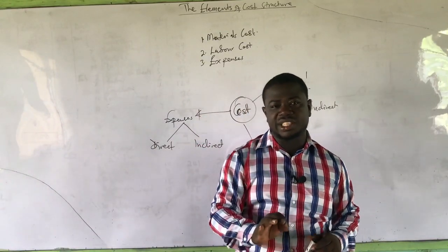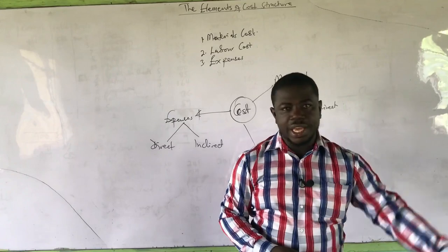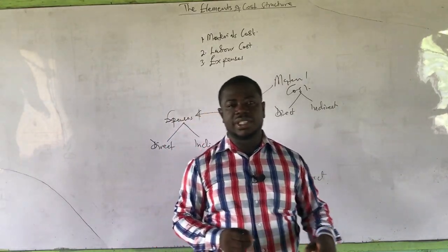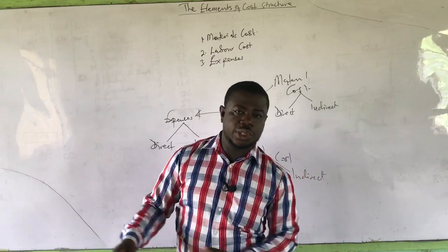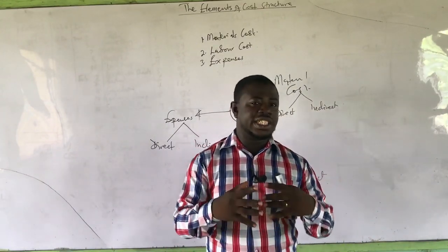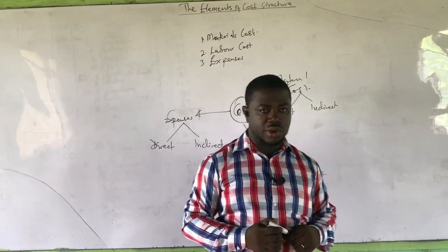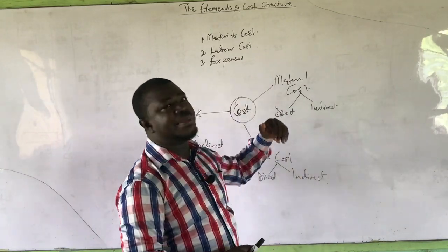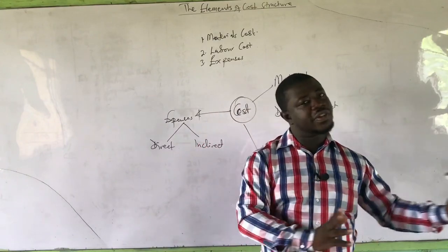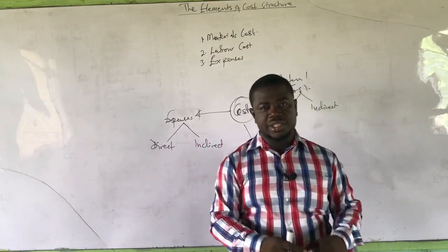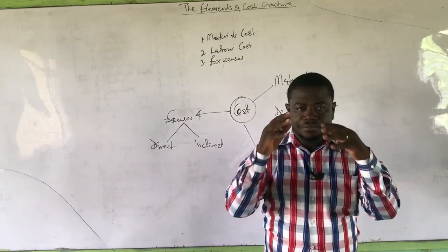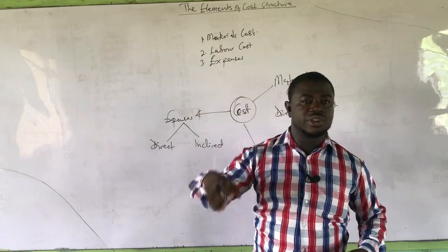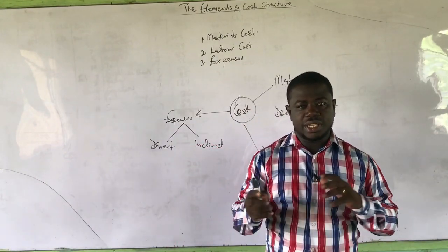Direct materials are those materials which can be easily traced to the product or the cost unit. Indirect materials are those materials that are more or less supporting materials for production — they do not necessarily form part visibly on the finished product. Direct material costs are the cost of those direct materials, the cost of materials traceable to the products. Indirect material costs are the cost of those supporting materials that are not traceable to the finished product.